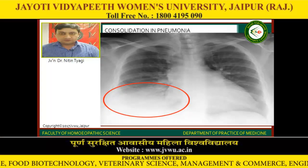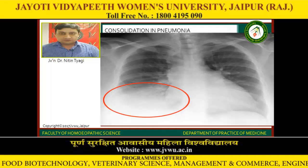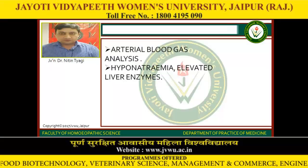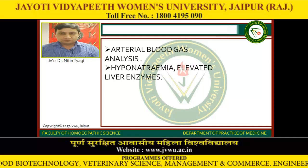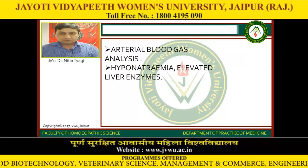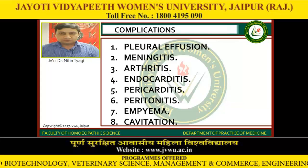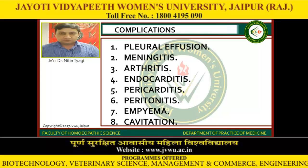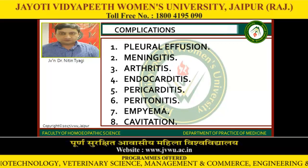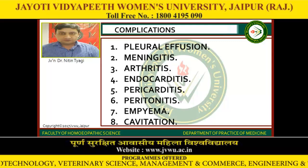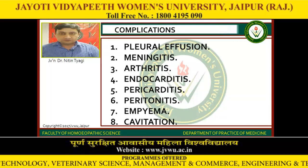This is a picture which shows the consolidation of the lower part of the right lung. Arterial blood gas analysis is also performed. Additional findings include hyponatremia and elevated liver enzymes. Complications include pleural effusion, meningitis, arthritis, endocarditis, pericarditis, peritonitis, empyema, and cavitation.